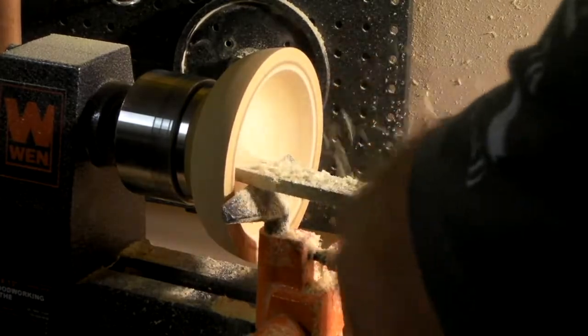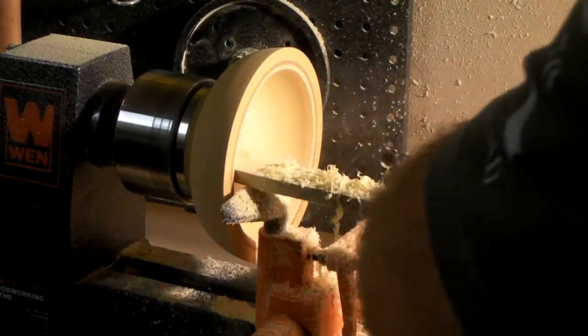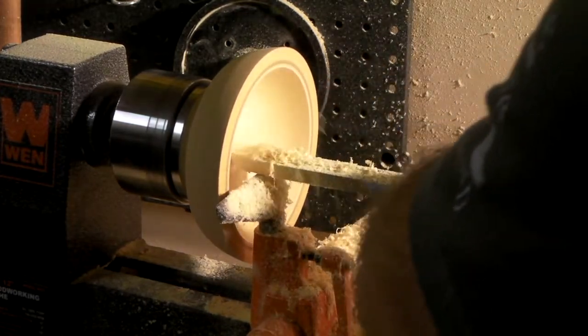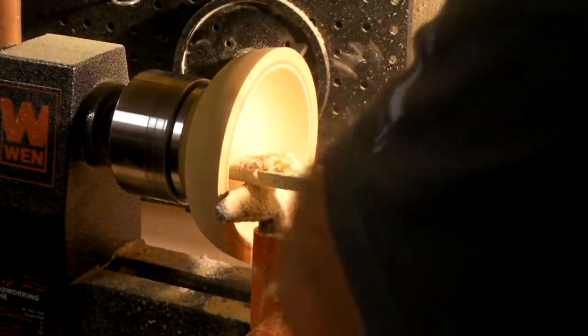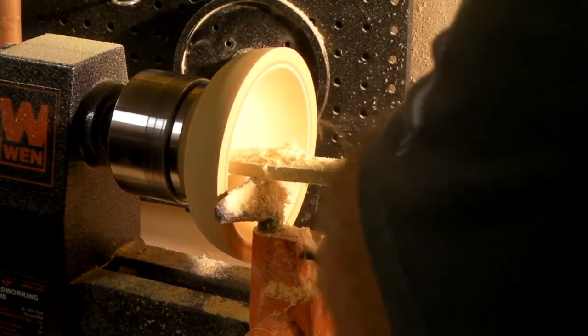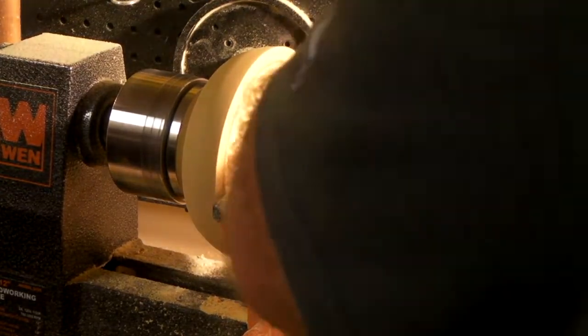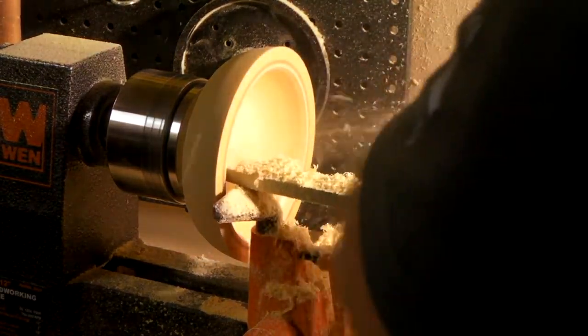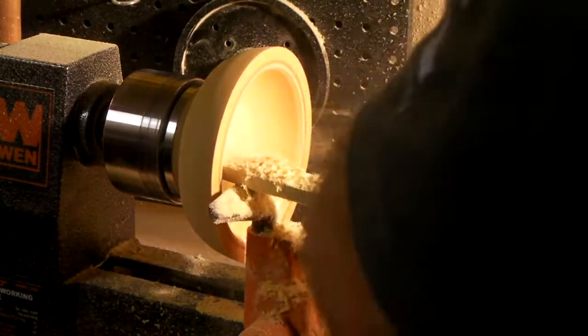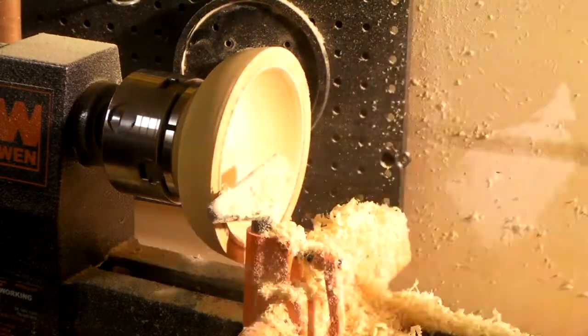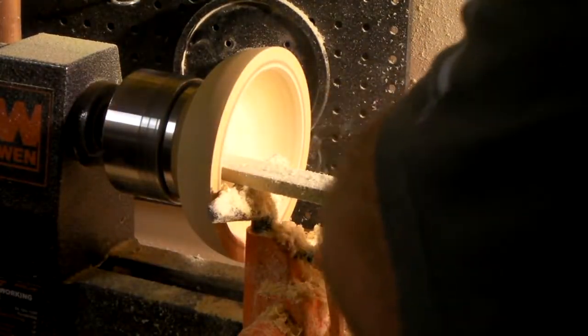So once I really started to get some of that hollow going with the bowl gouge, this thing just worked beautifully. Now you can see my pencil line on the upper edge there. That's what I'm working towards on that hollow. I eventually want to get that bowl hollowed out to about the thickness of that. And this bowl scraper is really allowing me to do that, working very slowly and methodically to take off a little bit layer by layer. Just ribbons of wood are flying out at this point.